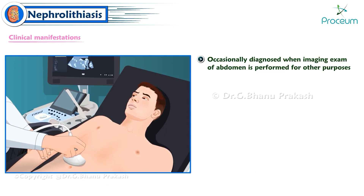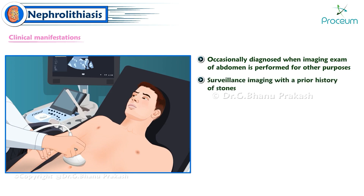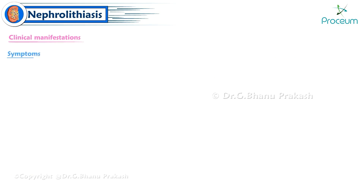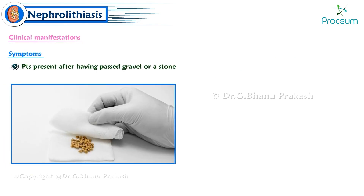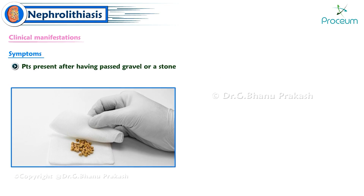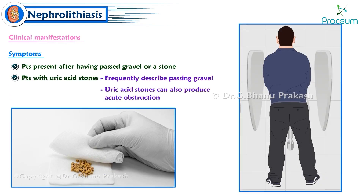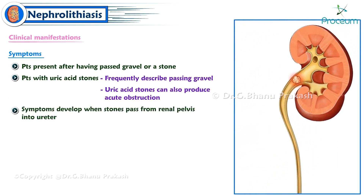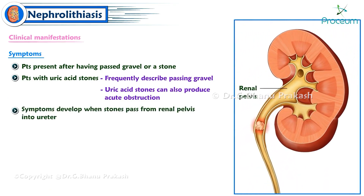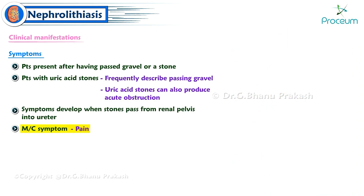Patients may occasionally be diagnosed with asymptomatic nephrolithiasis incidentally on abdominal imaging or during surveillance in those with a prior stone history. Patients occasionally present after passing gravel or a stone. Those who form uric acid stones frequently describe passing gravel, though uric acid stones can also produce acute obstruction.